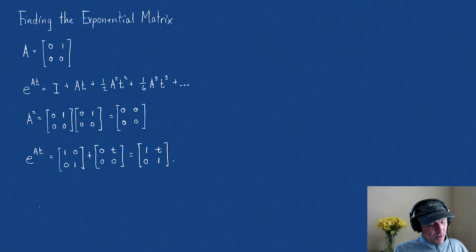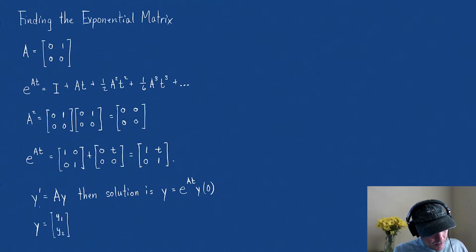Now let's think about the solution that this provides us. Remember we said if y' = Ay, then solution is y = e^(At) times some initial conditions y(0). But let's think about if we were to write this as the vector y = [y₁, y₂] equals [[1,t],[0,1]] times, and let's just say our initial conditions are [c₁, c₂].